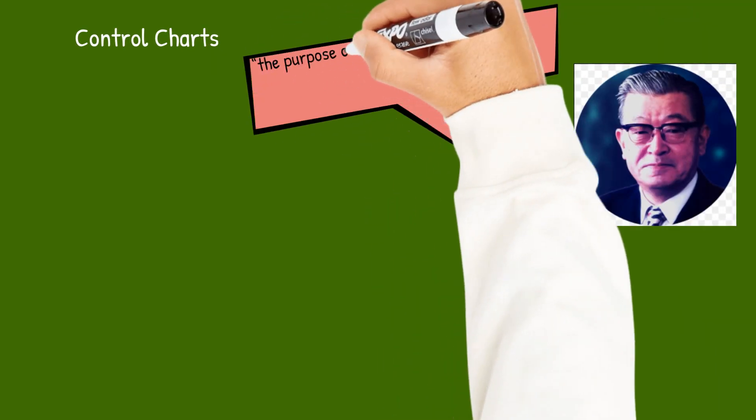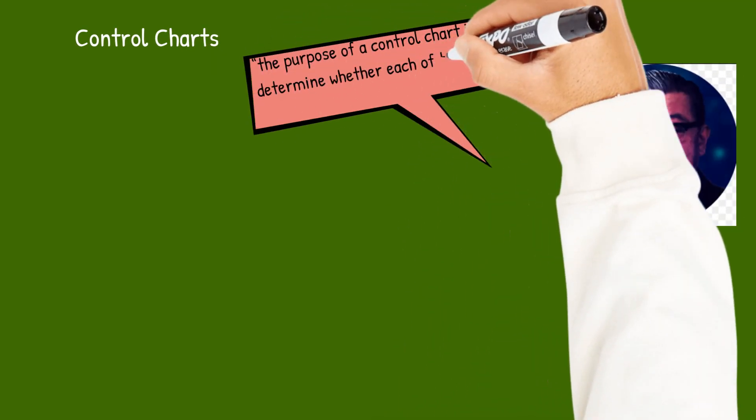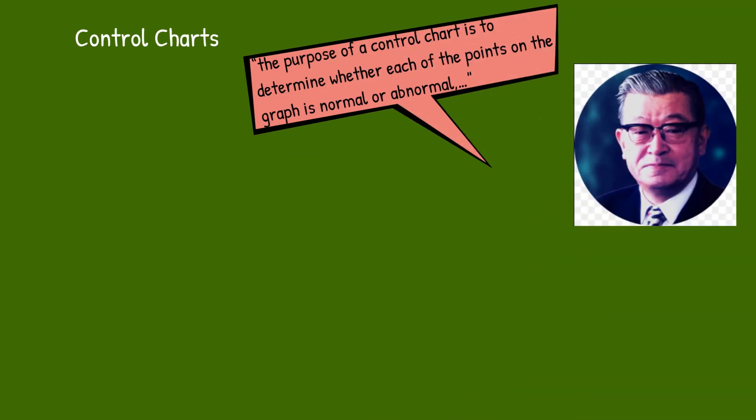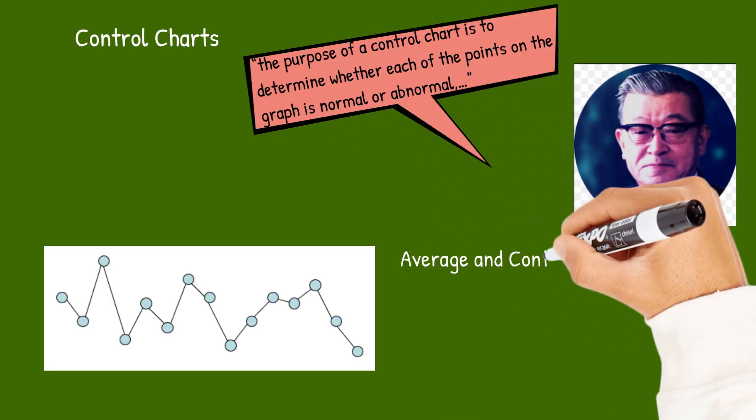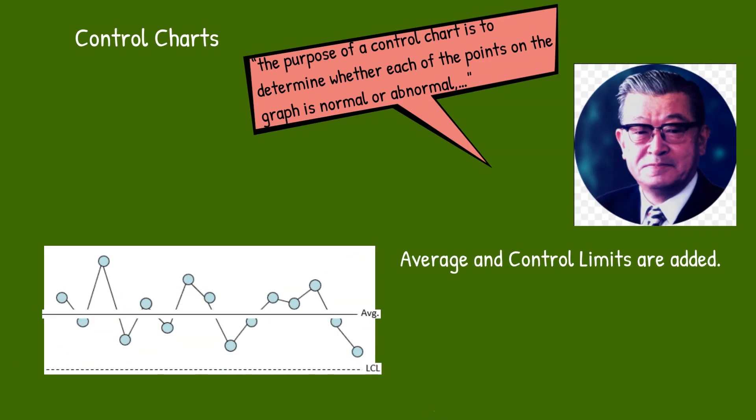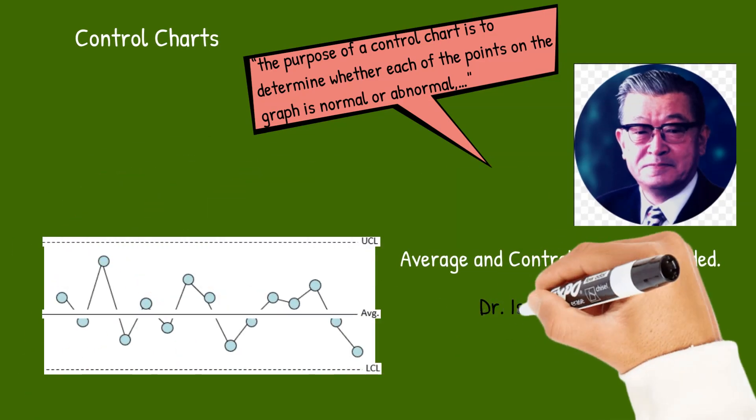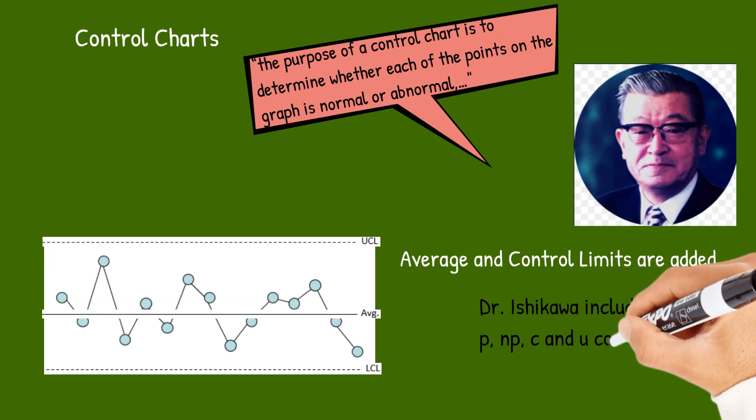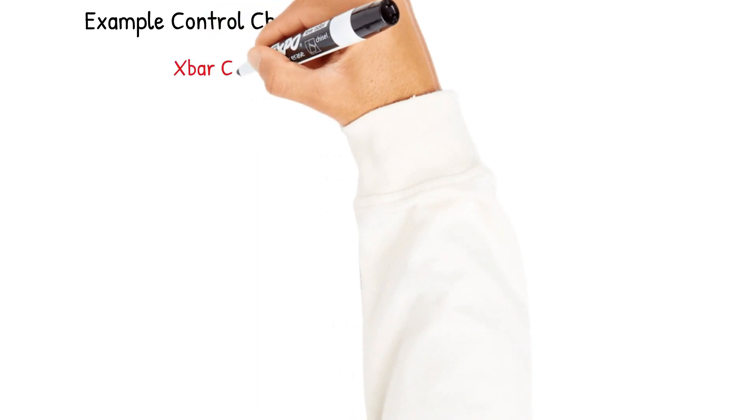He also included control charts. Dr. Ishikawa said this about a control chart: the purpose of a control chart is to determine whether each of the points on the graph is normal or abnormal. To do that, you plot the data, calculate an average, calculate the control limits, and add those. As long as there are no points beyond the limits or patterns, then each point is normal.